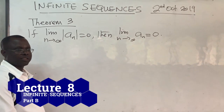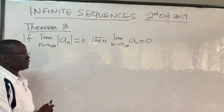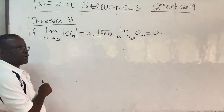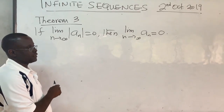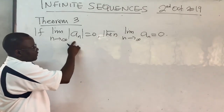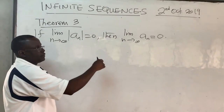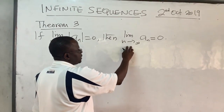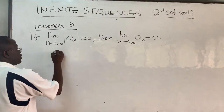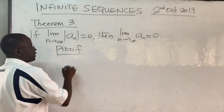Welcome to the second part of the lecture on sequences. We want to look at the third theorem needed to prove the convergence of a sequence. This theorem says that if the limit as n goes to infinity of the absolute value of aₙ is zero, then the limit of the sequence itself also goes to zero. We want to prove this and then use it to do a simple example.